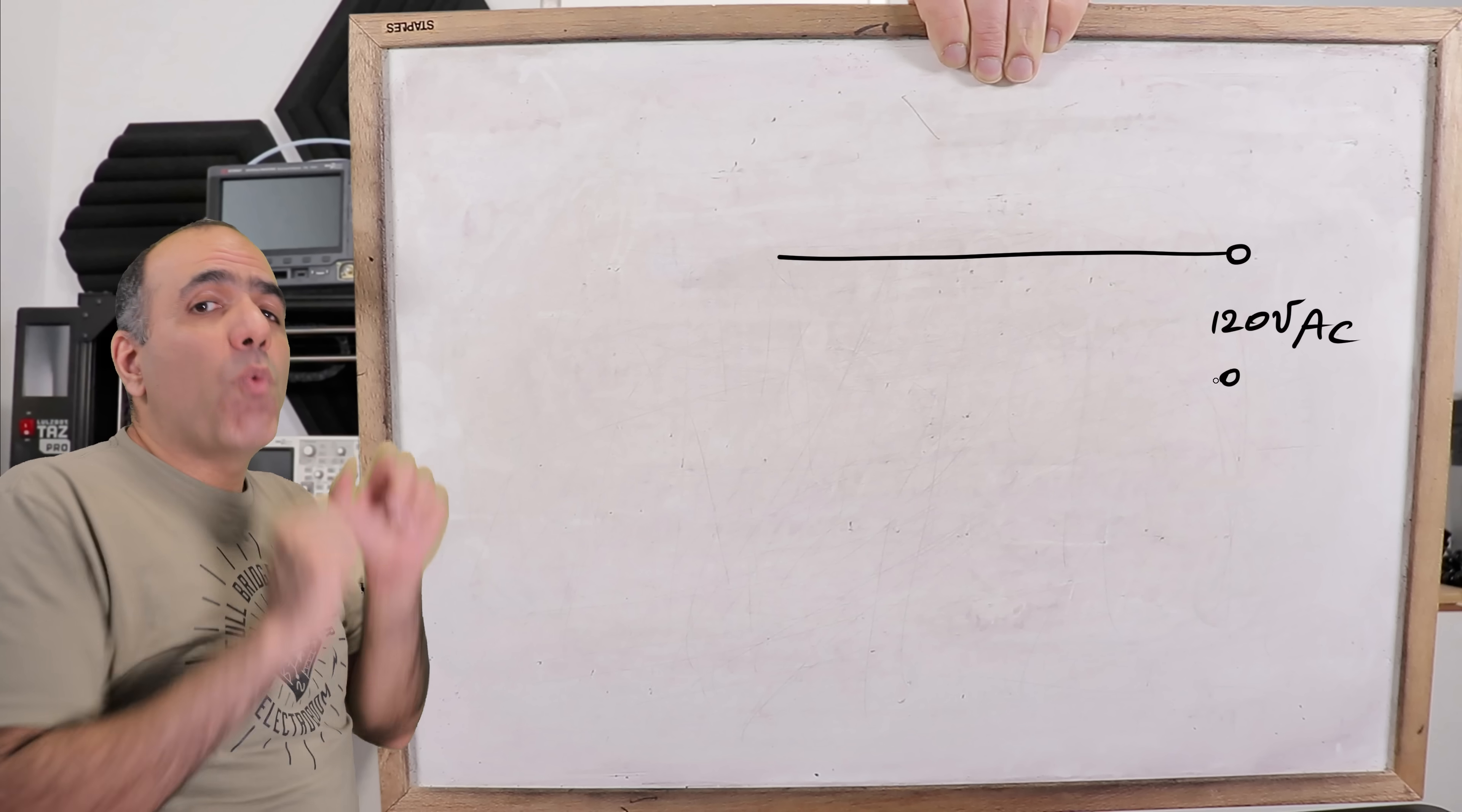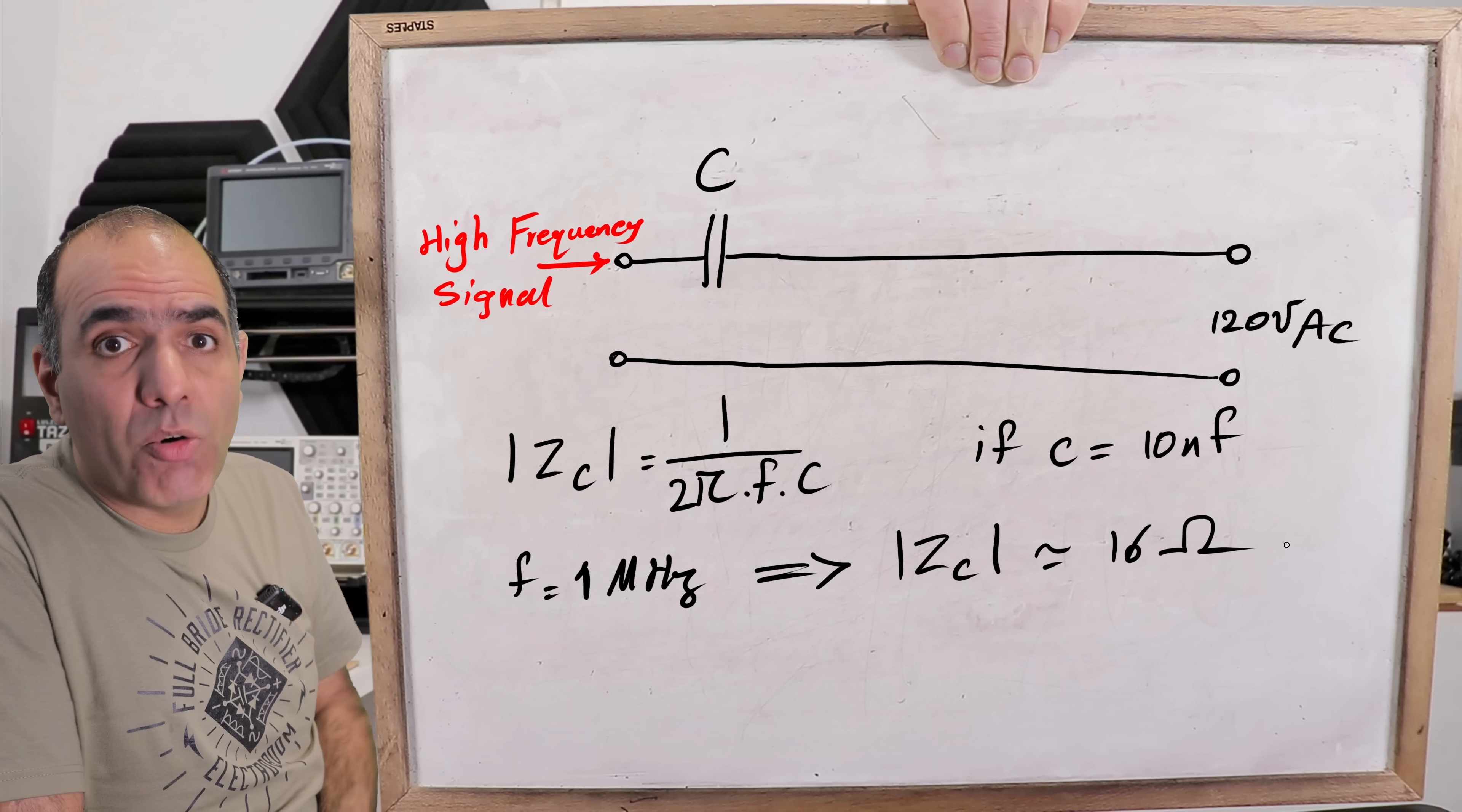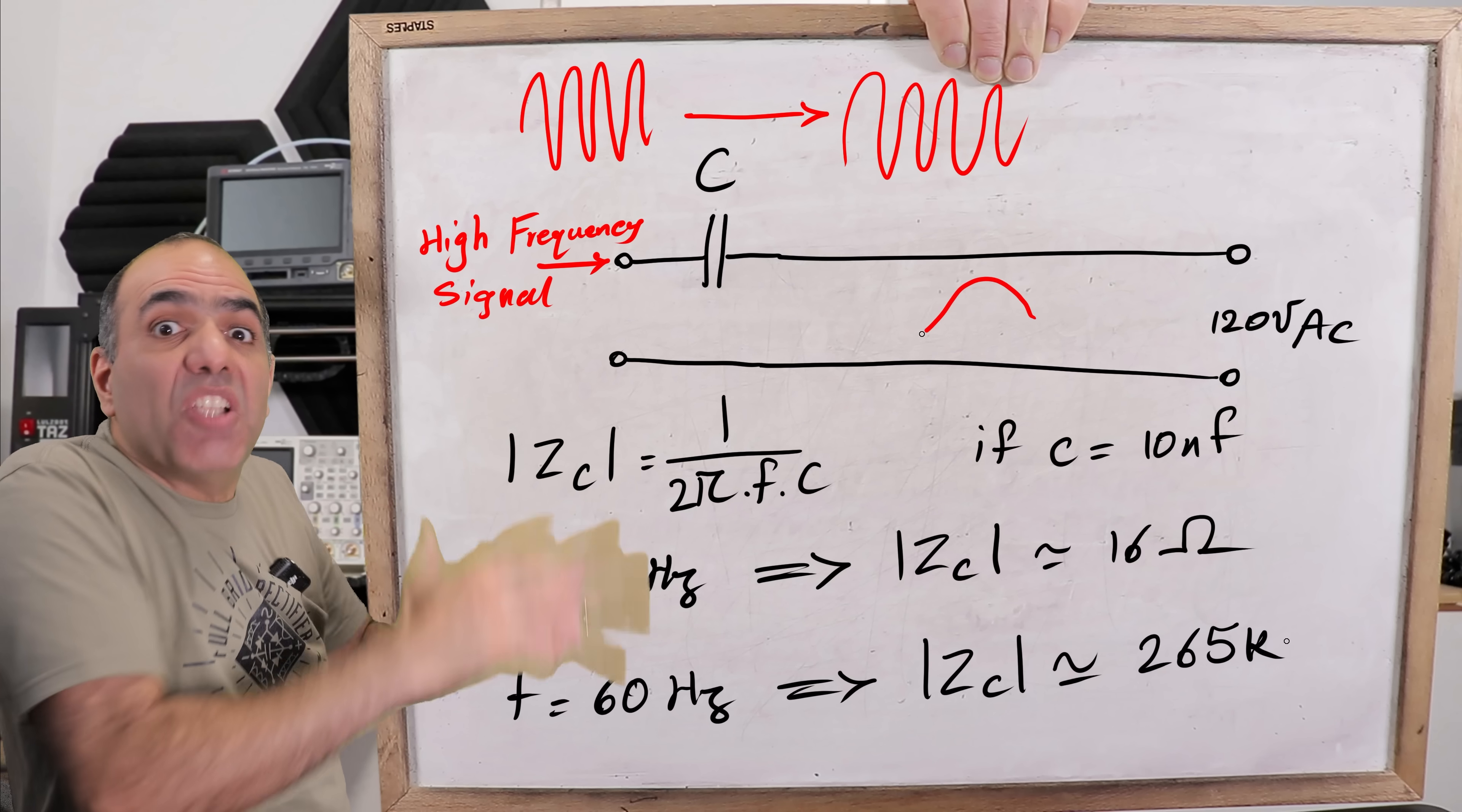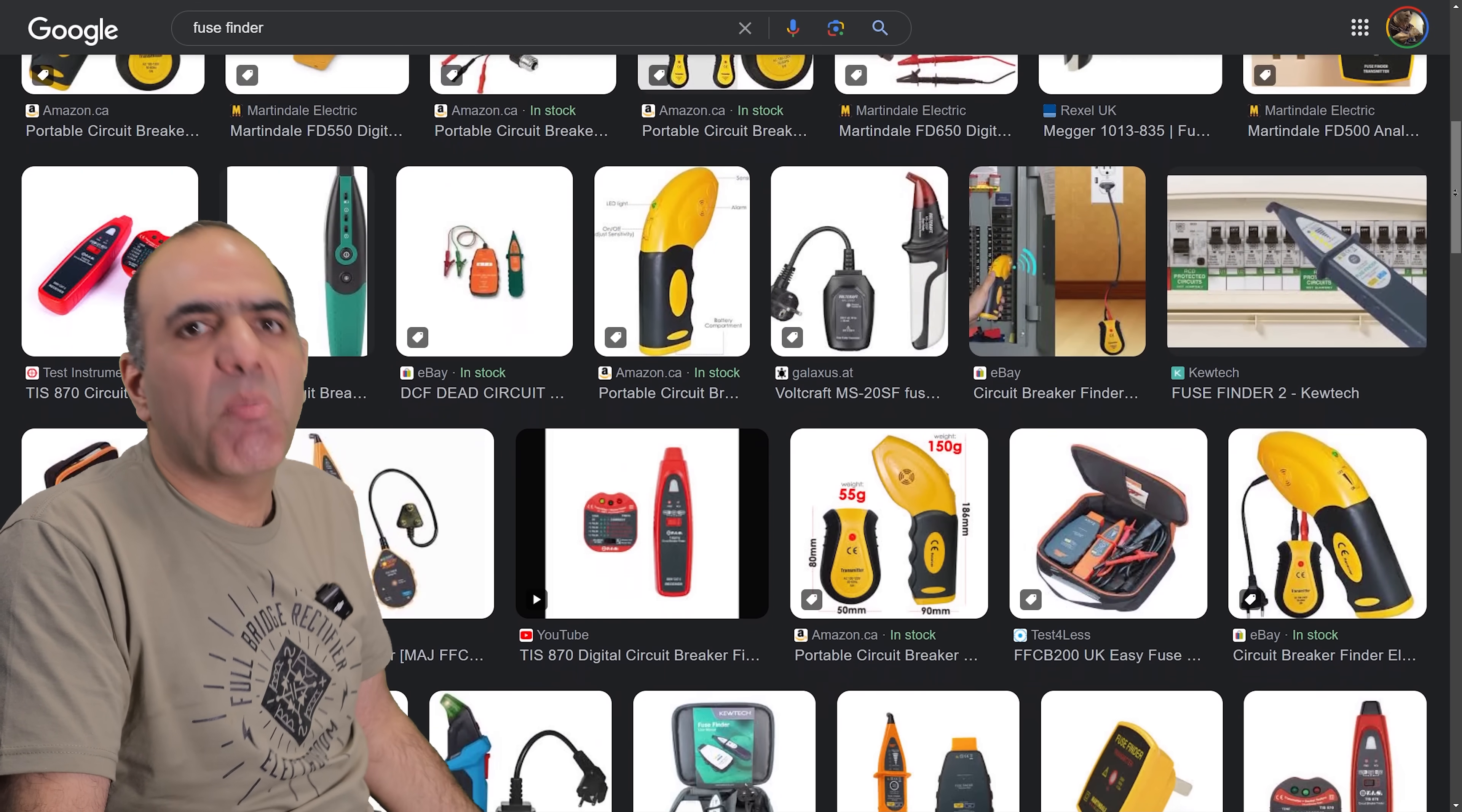To inject my signal into the live wire, we don't directly connect them. But we can pass it through a small high voltage capacitor like 10 nanofarad. If our signal is like 1 megahertz, the capacitor impedance would be around 16 ohms and the signal will be passing through the capacitor easily. But the impedance for the 60 hertz line frequency would be over 260,000 ohms! Easily blocked by the capacitor so it can't hurt my function generator so we should be able to- Oh, there are these circuit breaker finder devices out there already. Let's buy one.